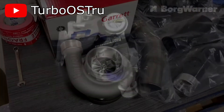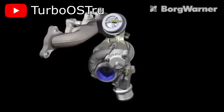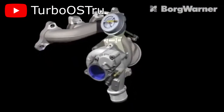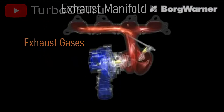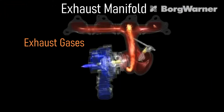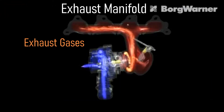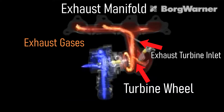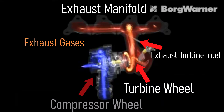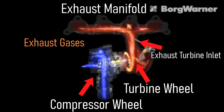Before we go into detail, I should explain in simple terms how a turbocharger works. Basically, a turbocharger works by using the exhaust gases coming out of the exhaust manifold, which go into the exhaust turbine inlet to spin a turbine wheel or impeller connected to a compressor wheel that compresses air and forces air into the engine, otherwise known as boost.